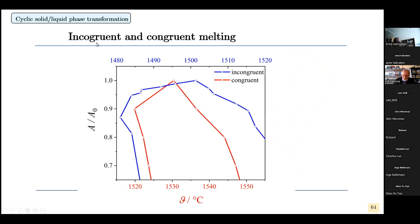In the incongruent melting, you see an inverse transformation: the temperature goes already up but the solid is still growing. The same occurs in the congruent case, but in the congruent case what is missing is a stagnant stage. During the incongruent case, during this time almost nothing happens — a very slow, almost stagnant stage. During the congruent case you don't have this stagnant stage because diffusion of the components is not required for the solid-liquid front to advance.